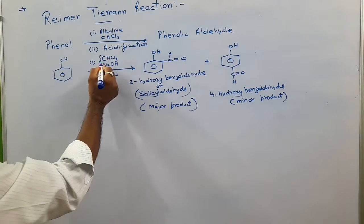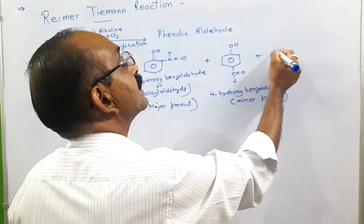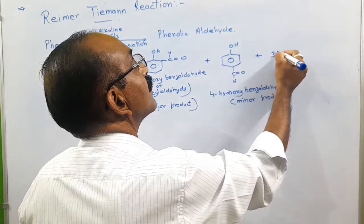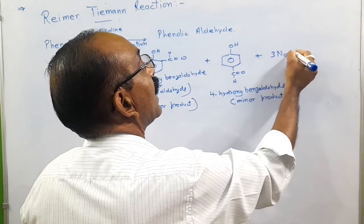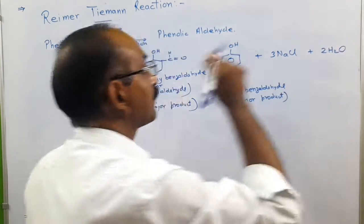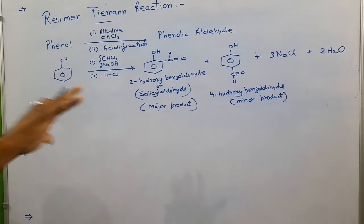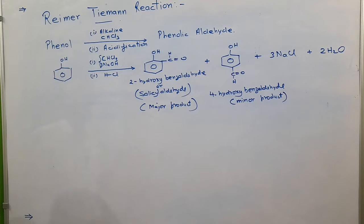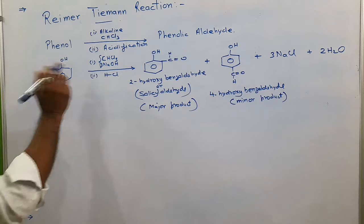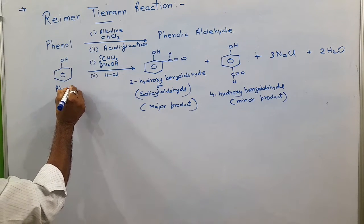Along with these products, NaCl and water are also set free. So you may write the reaction in this manner. Remember, in this particular reaction, salicylaldehyde is the major product. Note down one important point: in this reaction, a carbene is formed as an intermediate. The exact name of that carbene is dichloromethylene.